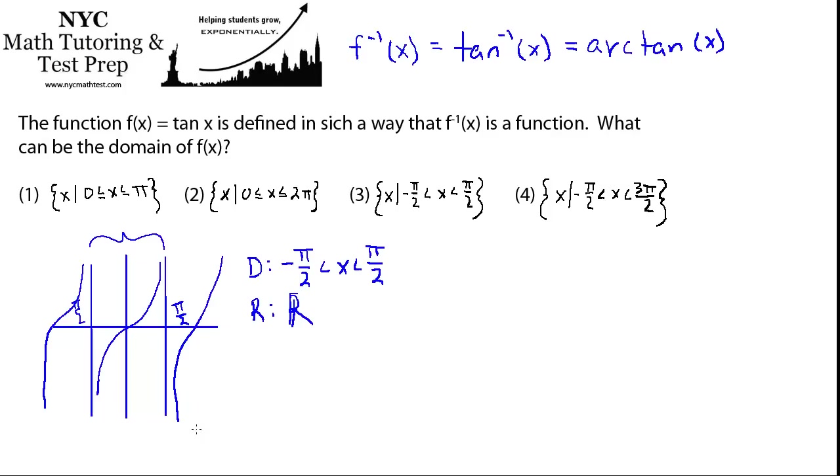So what does this mean for the arctan, or the inverse tan? Well, what this means is that if we want to draw the arctan, it's going to have the same situation where it's going to iterate many times, and it's going to have this general shape. If I can draw this.